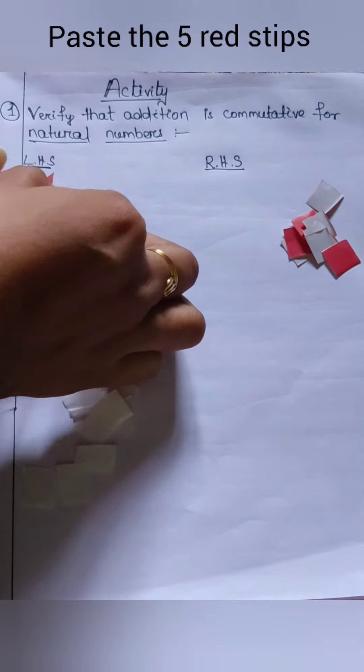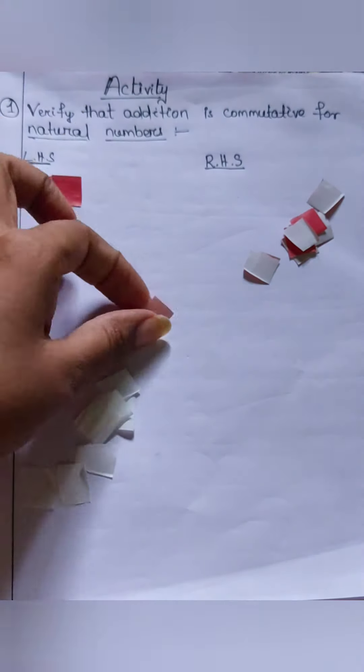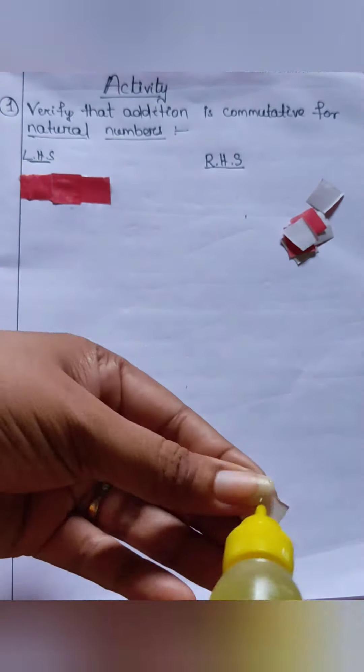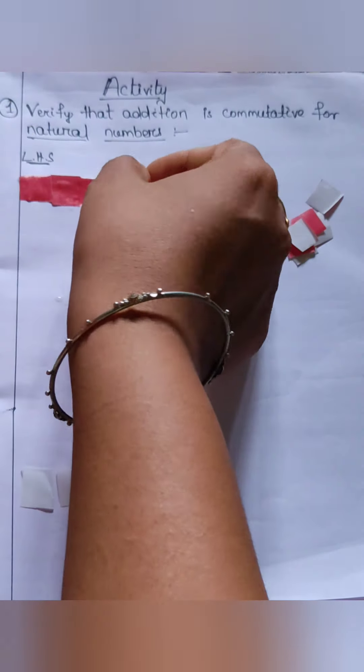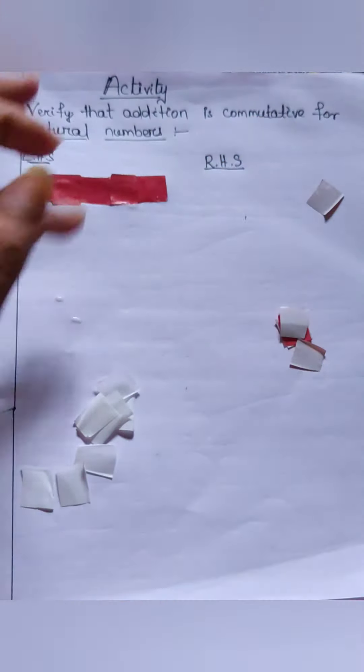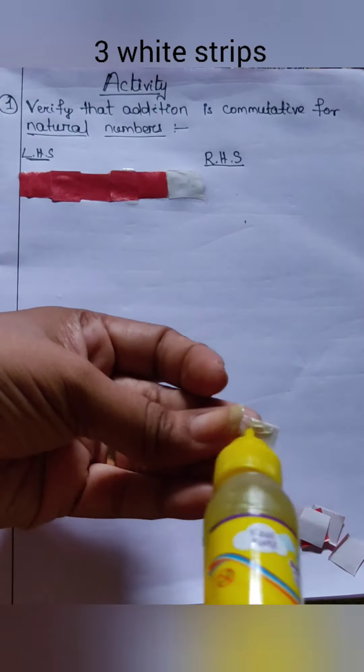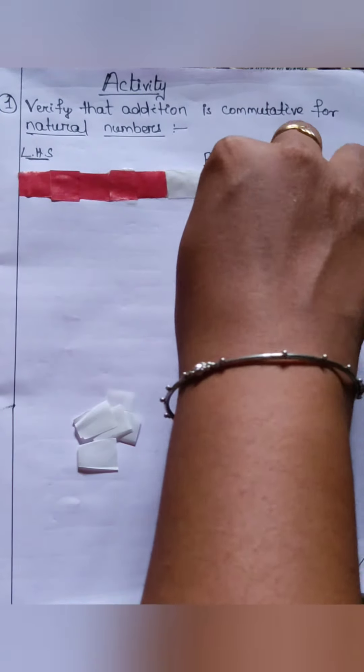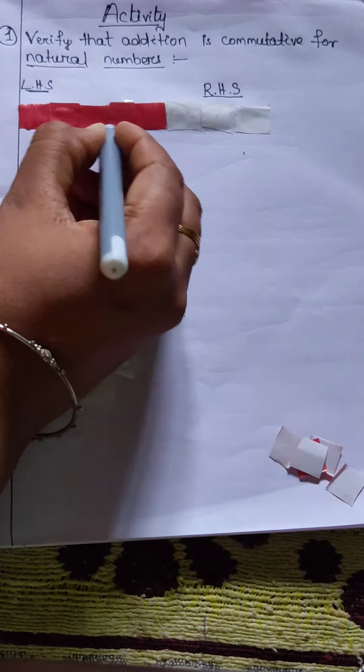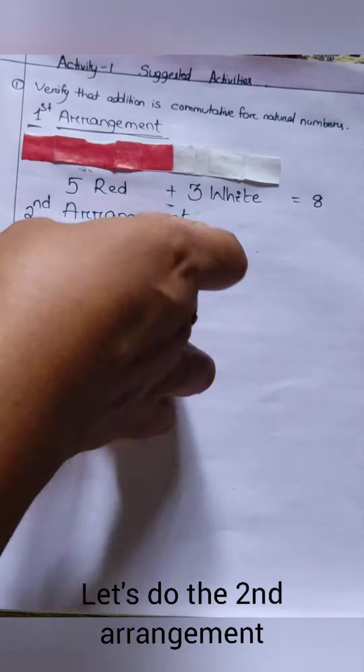Now paste the five red strips and three white strips nearby it. So what you will get: five red strips and three white strips, which will be equal to eight. Now in the second arrangement, paste three whites and five red strips.